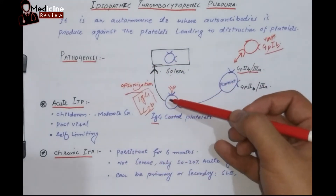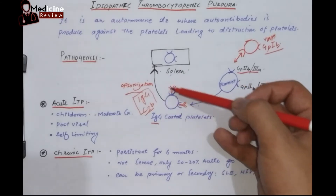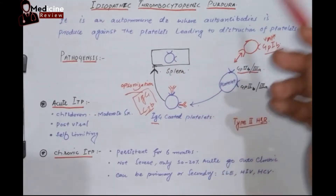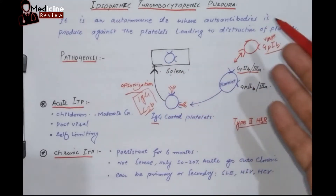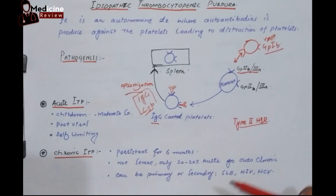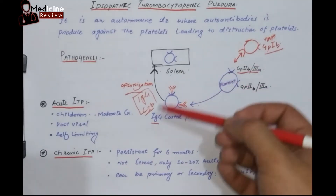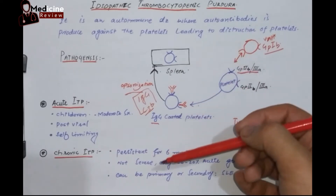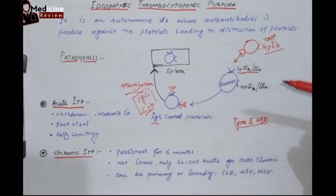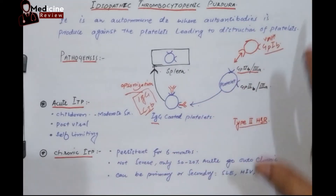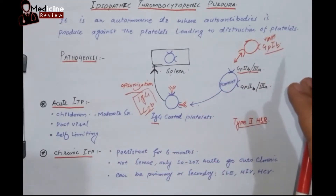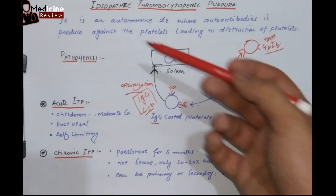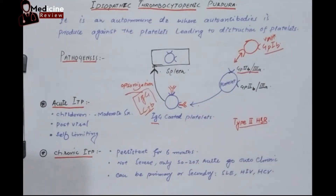Whenever these IgG-coated platelets circulate in the blood, they are sensed by factors such as IgG and C3B, which bring the platelets to the spleen. In the spleen, reticuloendothelial cells destroy these platelets, causing thrombocytopenia. This is a short review of the pathogenesis of idiopathic thrombocytopenic purpura.